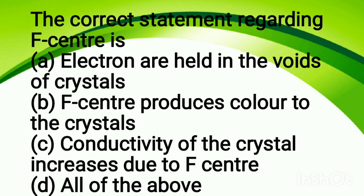The correct statement regarding F center is: option A, electrons are held in voids of the crystal; option B, F center produces color in the crystal; option C, conductivity of the crystal increases due to F center; option D, all of the above. The correct answer is all of the above. The 'F' in F center comes from the German word 'Farbe,' meaning color. When an anion moves out, an electron occupies its place — this gives color to the crystal and also helps with conductivity.